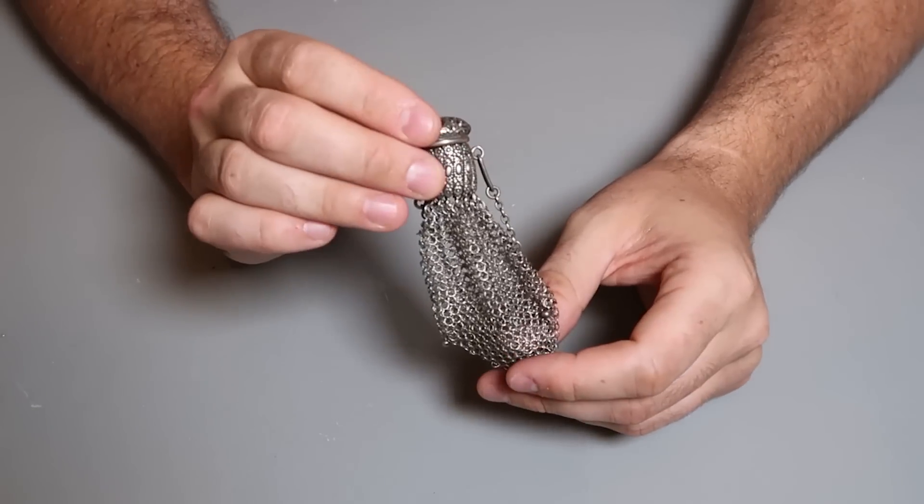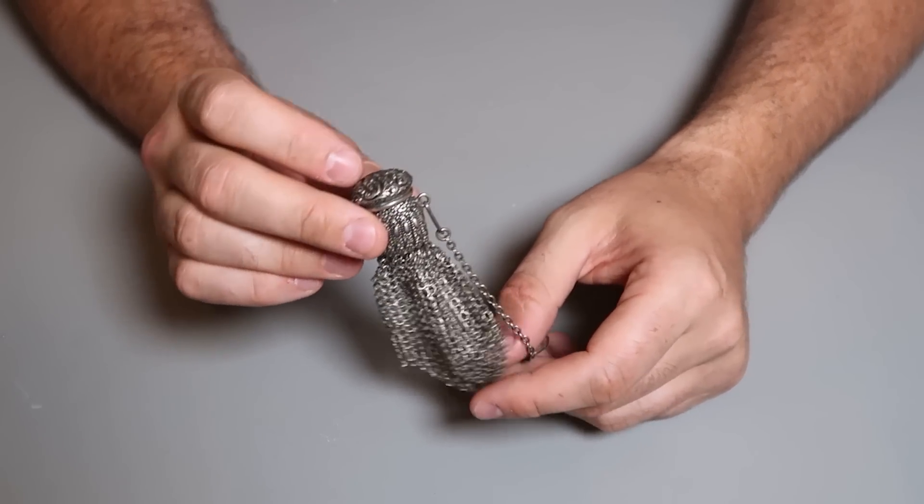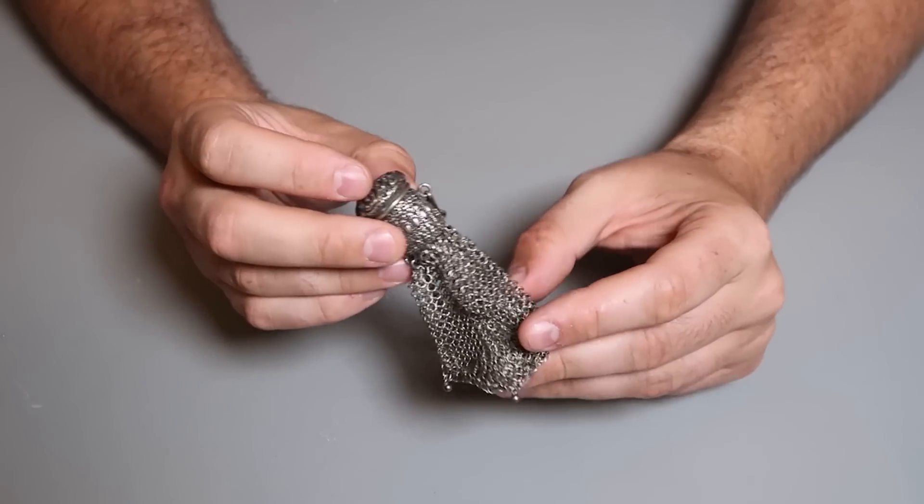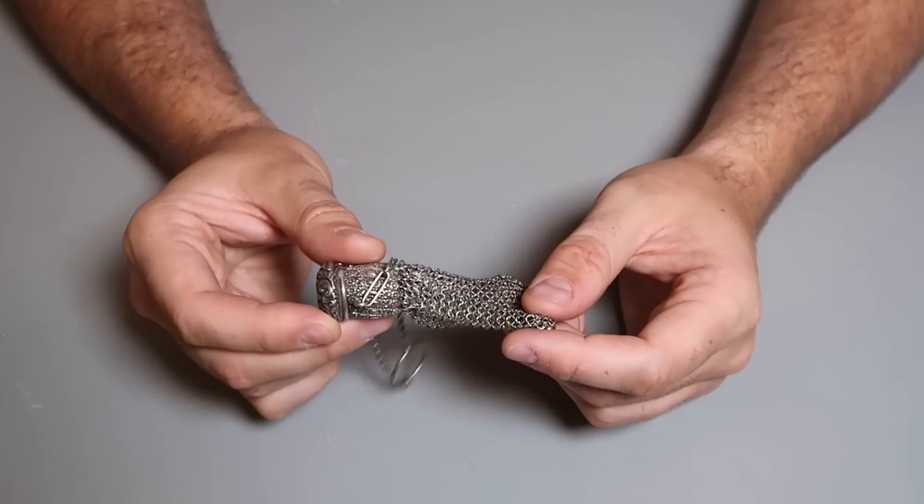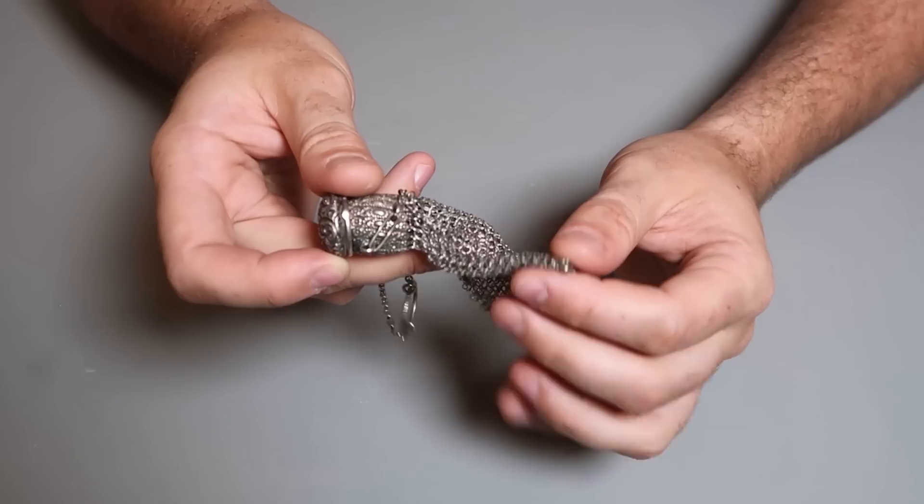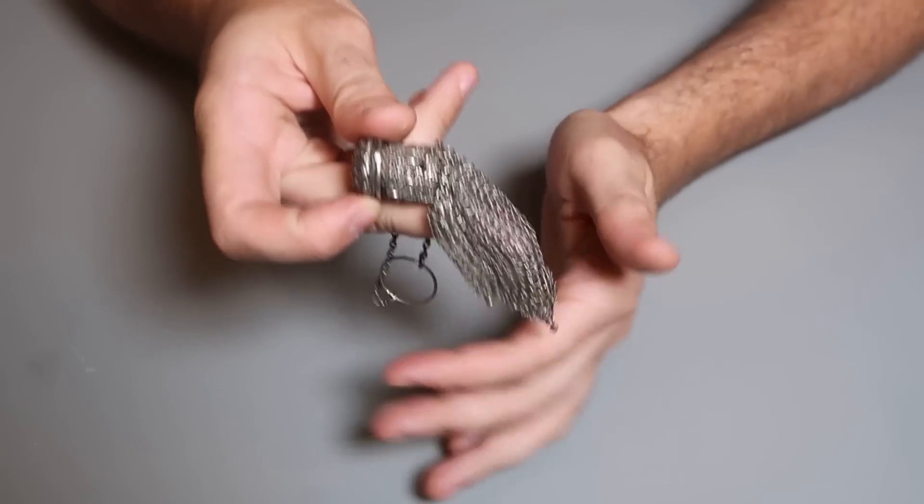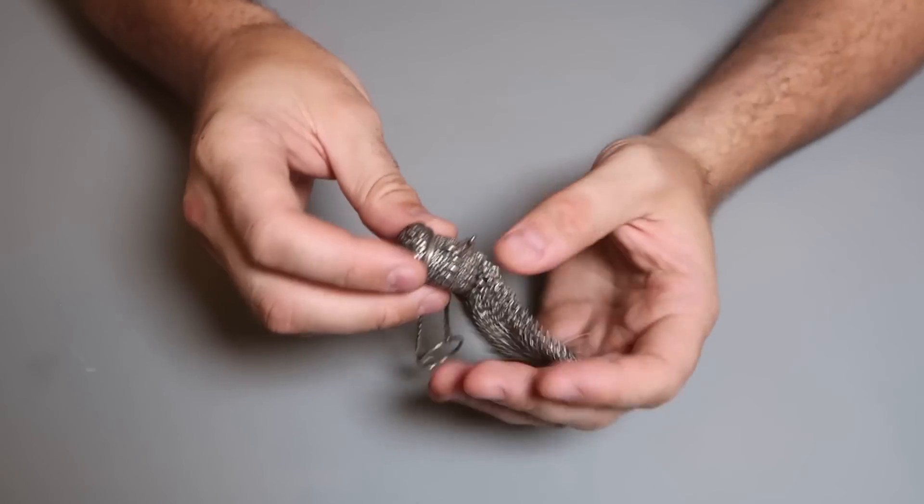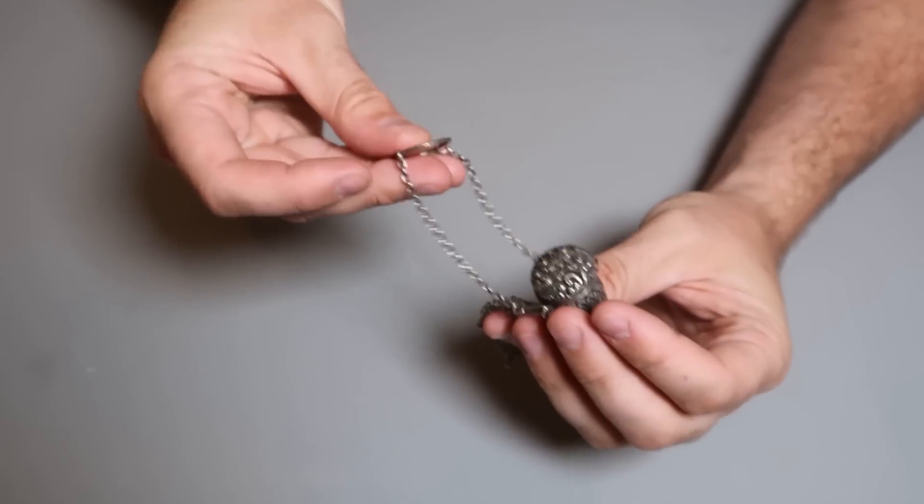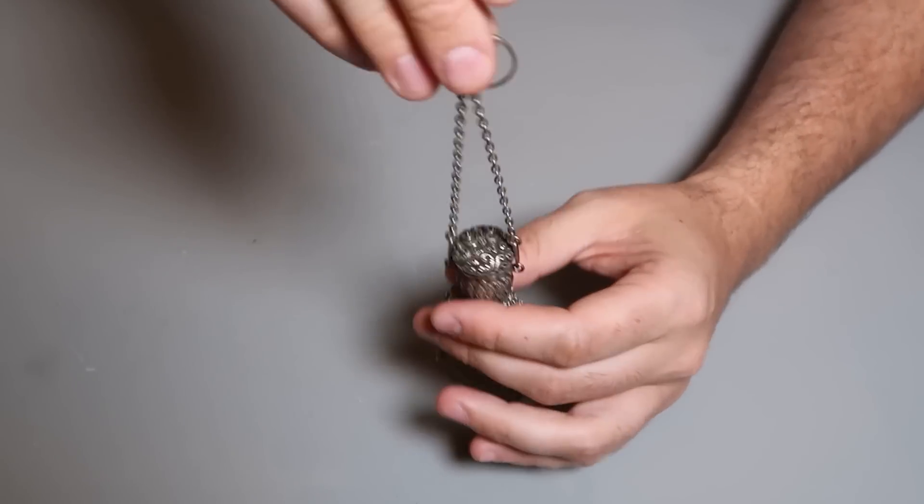Really old stuff over here for sure. As you can see, it's all chain mail, and it has little balls at the end over here like decorative. Just a beautiful piece. And you have a ring over here, so you would hang it somewhere.